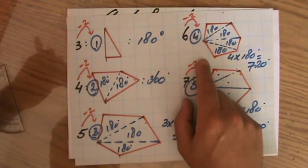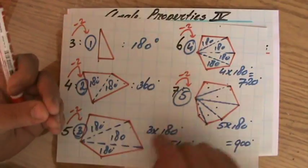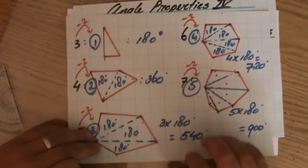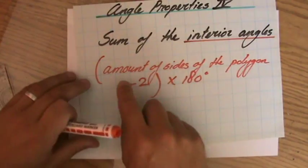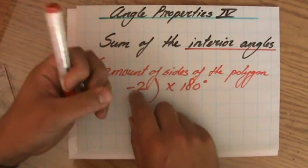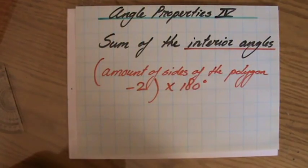So for a heptagon, seven sides, so seven minus two is five times 180 degrees, so 900 degrees. For a decagon, ten sides, it's going to be ten minus two, eight times 180 degrees.